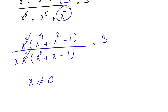So let's see what we can do now. We have x to the 4 plus x squared plus 1 in the numerator, and we're going to manipulate this expression to get something that can cancel with the denominator. Maybe pause the video and see if you can come up with something to simplify this equation.